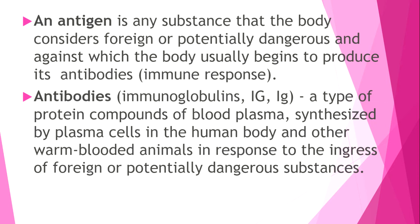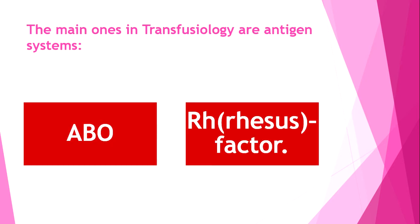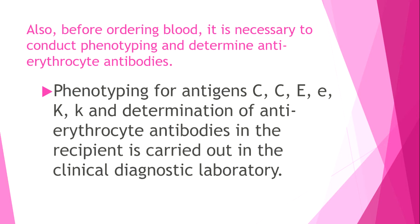Antibodies, or immunoglobulins, are a type of protein compounds of blood plasma, synthesized by plasma cells in the human body and other warm-blooded animals in response to the ingress of foreign or potentially dangerous substances. The main antigen systems in transfusiology are the ABO system and the Rh factor. We must determine blood type by the ABO system and Rh factor, and before transfusing blood it is necessary to conduct phenotyping and determine anti-erythrocyte antibodies.